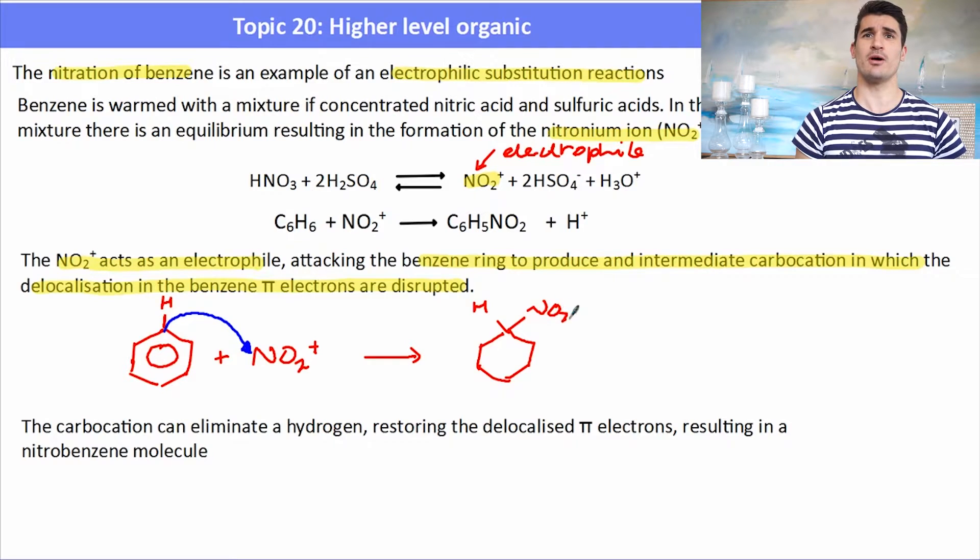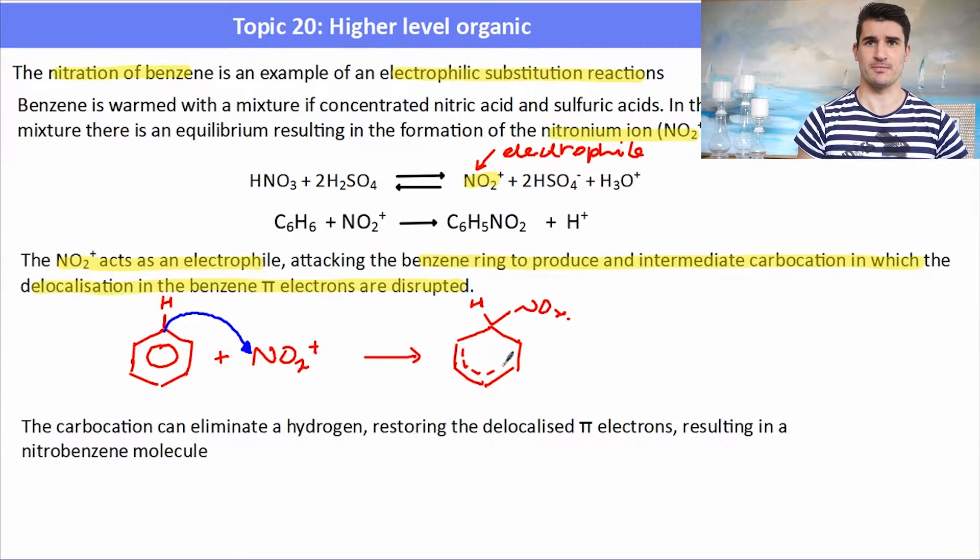What happens is we form a carbocation intermediate where the nitronium ion is bonded to the benzene ring. We have dotted lines to indicate that the delocalization has been disrupted, but it is still partially there. There still is delocalization in the other sections of the ring. It's just where we formed this area where a carbon now has four bonds, it will be slightly disrupted because it's a carbocation.